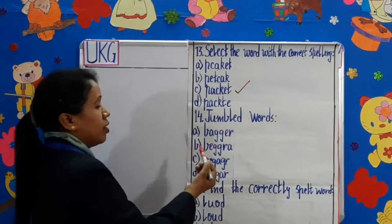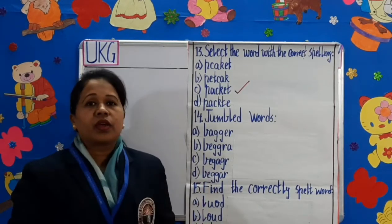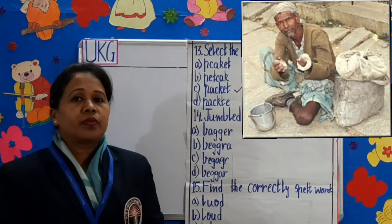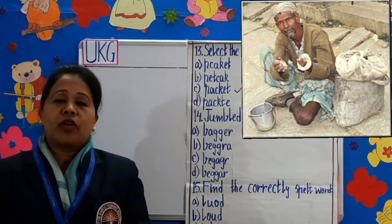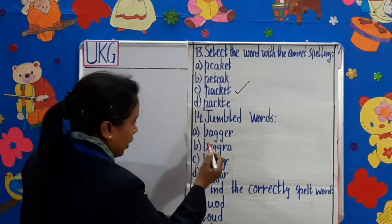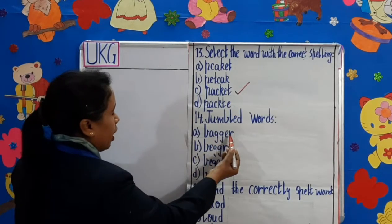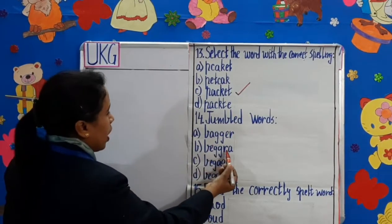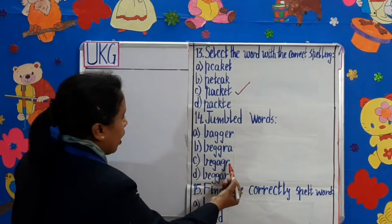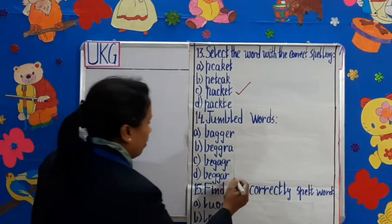Question number 14: Jumbled words. See children, four options are given. Can you see the picture? What is it? Yes, this is the picture of a beggar. So, let's find the correct spelling of beggar. B-A-G-G-E-R — no. B-E-G-G-R-A — no. B-E-G-A-G-R — no. B-E-G-G-A-R — yes. Beggar.